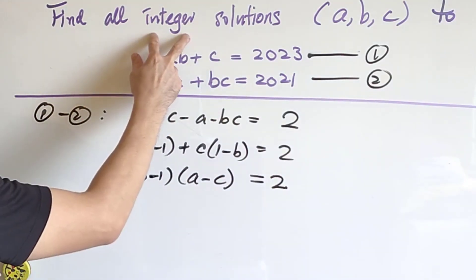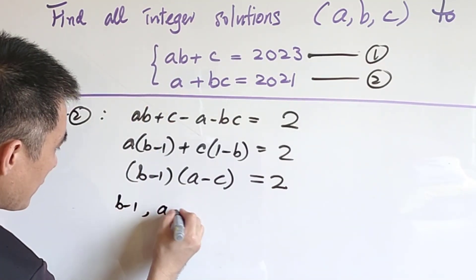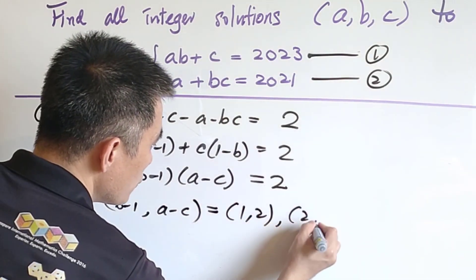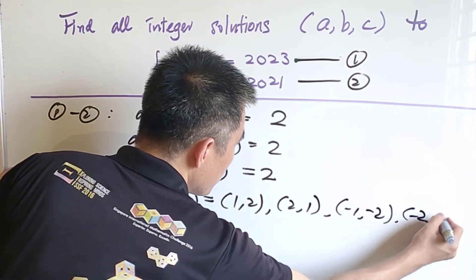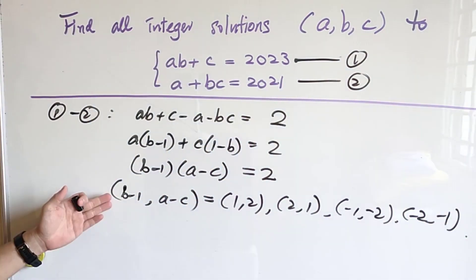And see, we are interested to get all the integer solutions. B minus 1, A minus C is equal to 1, 2, 2, 1, negative 1, negative 2, or negative 2, negative 1. And we shall consider each of the cases.